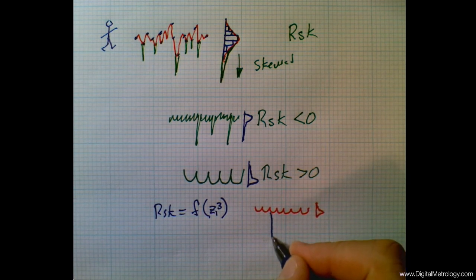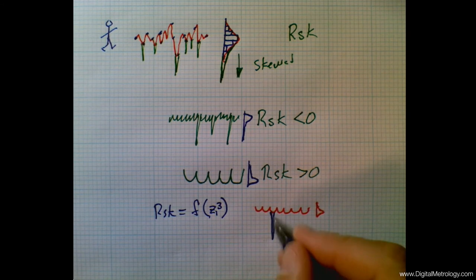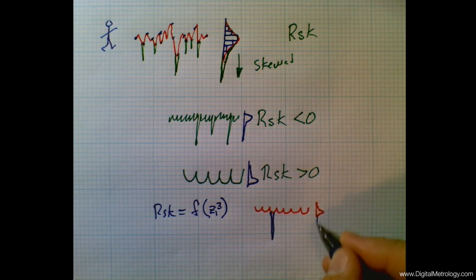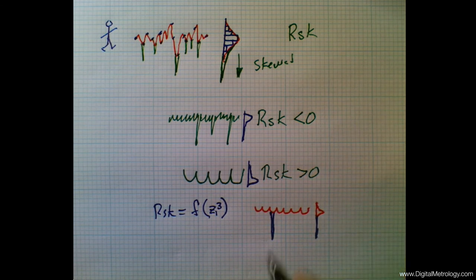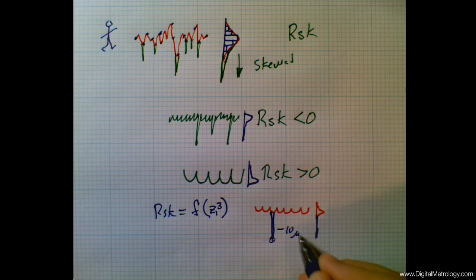But if we introduce one pit, or one scratch, or one bit of porosity, and have a deep valley, there's going to be a long tail in this distribution for those points. And these points, let's say that's negative 10 micrometers of valley.